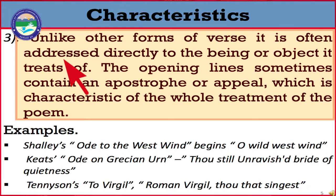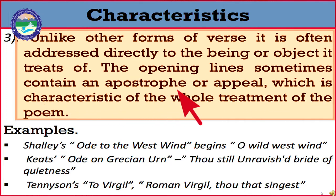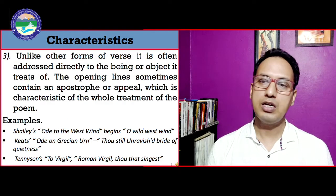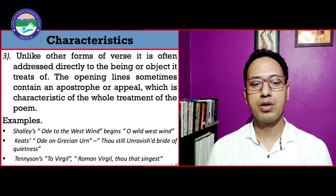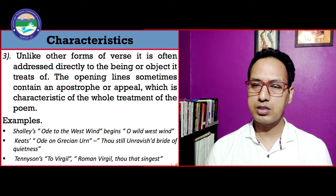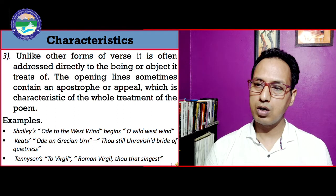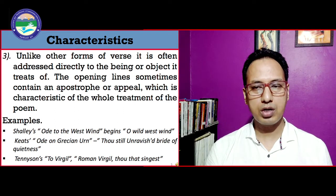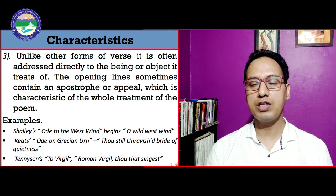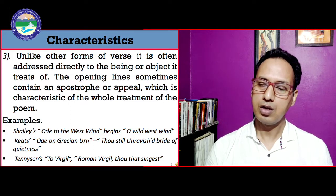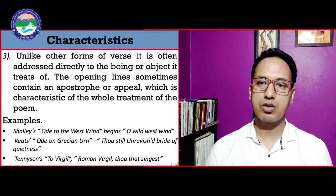Number three: unlike other forms of verse, an ode is often addressed directly to the being or object it treats. The opening lines sometimes contain an apostrophe or appeal which is characteristic of the whole treatment of the poem. Generally when an ode begins, the very first lines always start with an address to that person or subject to which it is devoted.